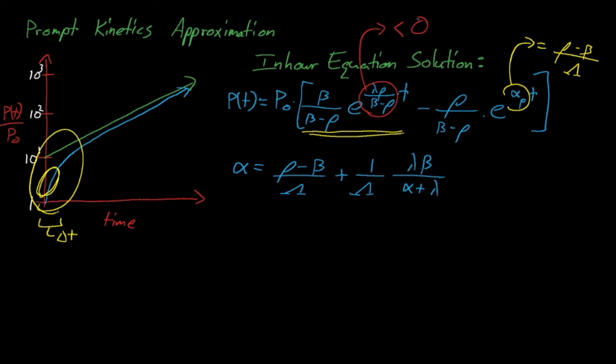Because our system is prompt supercritical, its asymptotic power relies only on prompt neutron multiplication, but at the very start of the transient, our delayed neutron source is still releasing a non-negligible amount of delayed neutrons, which then get multiplied by our enormous prompt supercritical reactivity and cause a quick jump in the power. Eventually, our delayed neutron source just can't keep up with the prompt neutrons, and the delayed neutron contribution becomes negligible as the power increases by many orders of magnitude. But at the very start of the transient, the delayed neutrons give the reactor's power a quick boost.